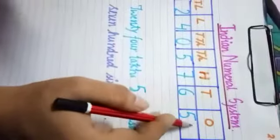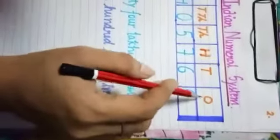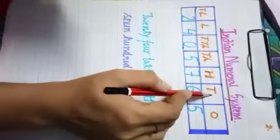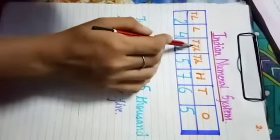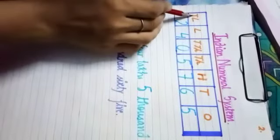So starting from the rightmost digit, we know it is 1's place, 10's place, 100's place, 1000's place, 10,000's place, lakh place and 10 lakhs.